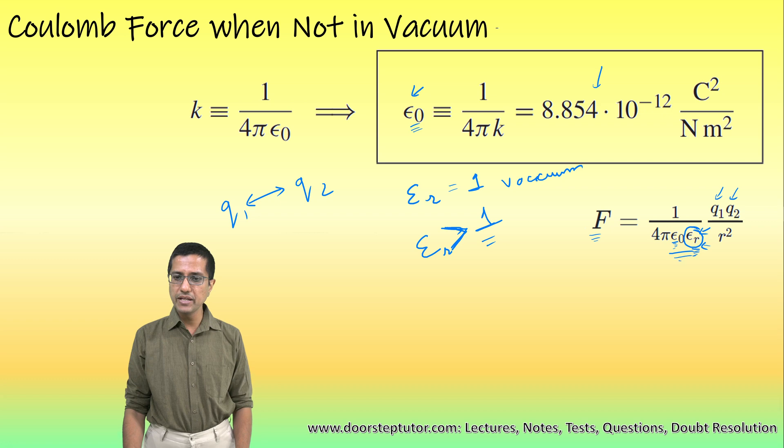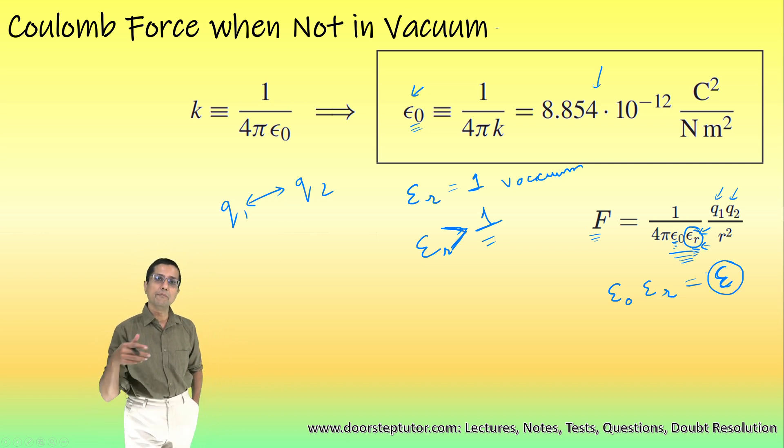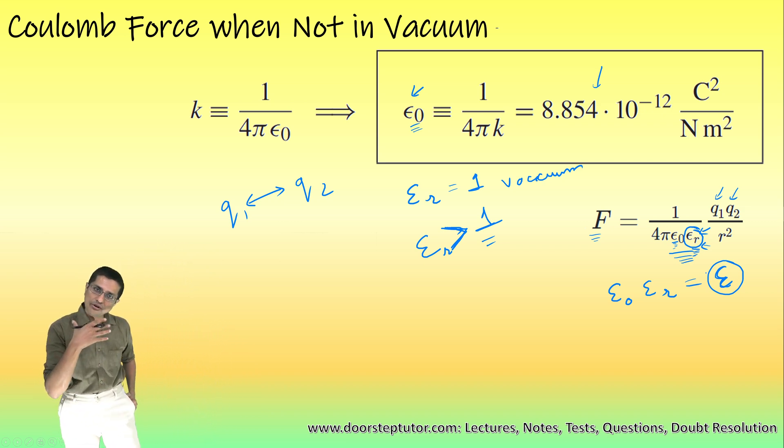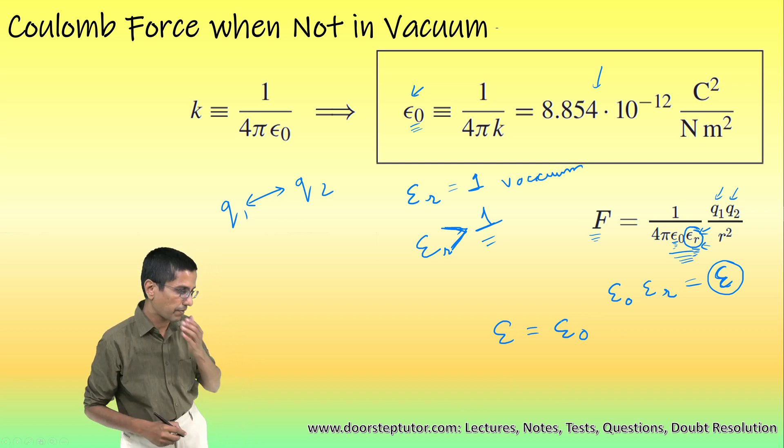Now sometimes this epsilon 0 and epsilon r are combined together to give us a simple value known as epsilon, and this is the absolute permittivity of the medium. In the case of vacuum again, the absolute permittivity is just same as the epsilon 0, our constant.